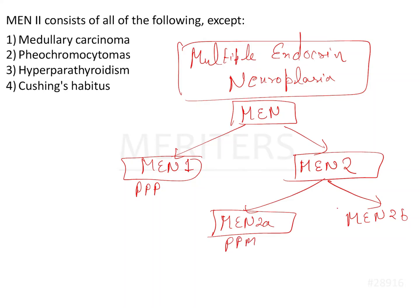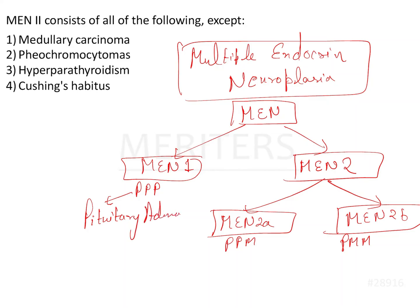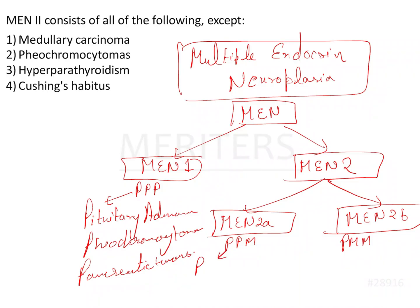In this mnemonic system, P stands for pheochromocytoma, P for pituitary adenoma, and P for pancreatic tumors — these three make up MEN1 as Triple P. For MEN2a, the first P is parathyroid hyperplasia, meaning hyperparathyroidism, and the second P is pheochromocytoma.